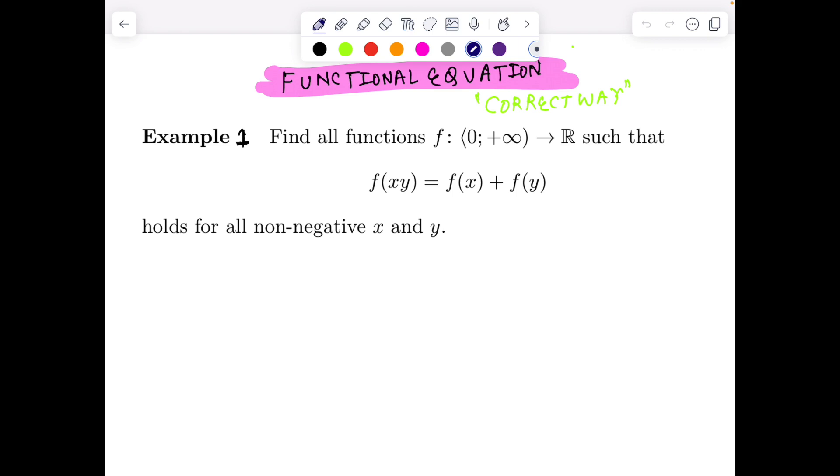First question: Find all functions f: [0,∞) → ℝ such that f(xy) = f(x) + f(y). Before we go further, first thing we have assumed nothing about continuity of the function. Similarly we have assumed nothing about differentiability. Based on just this information we need to find the function.